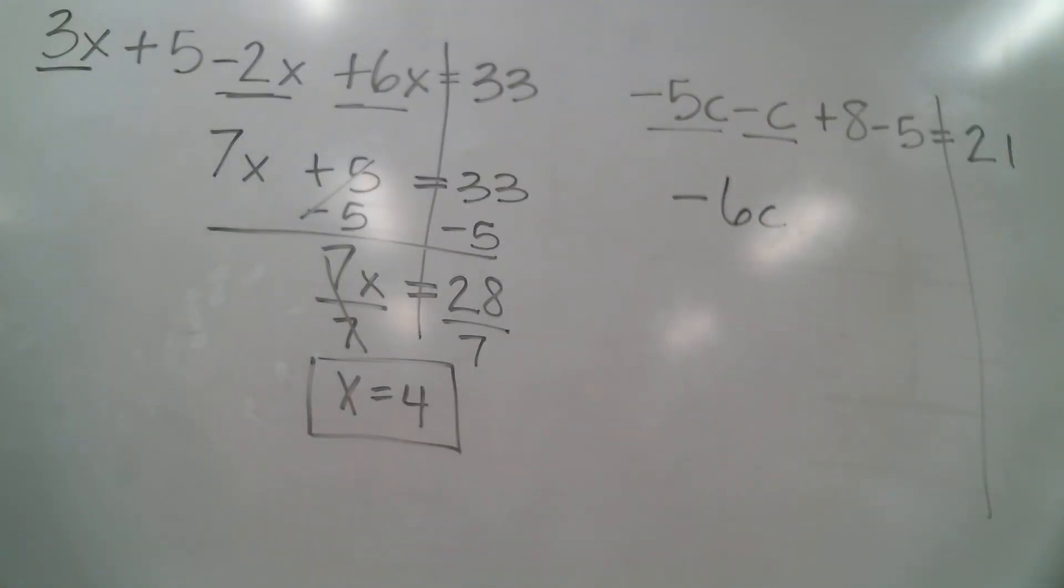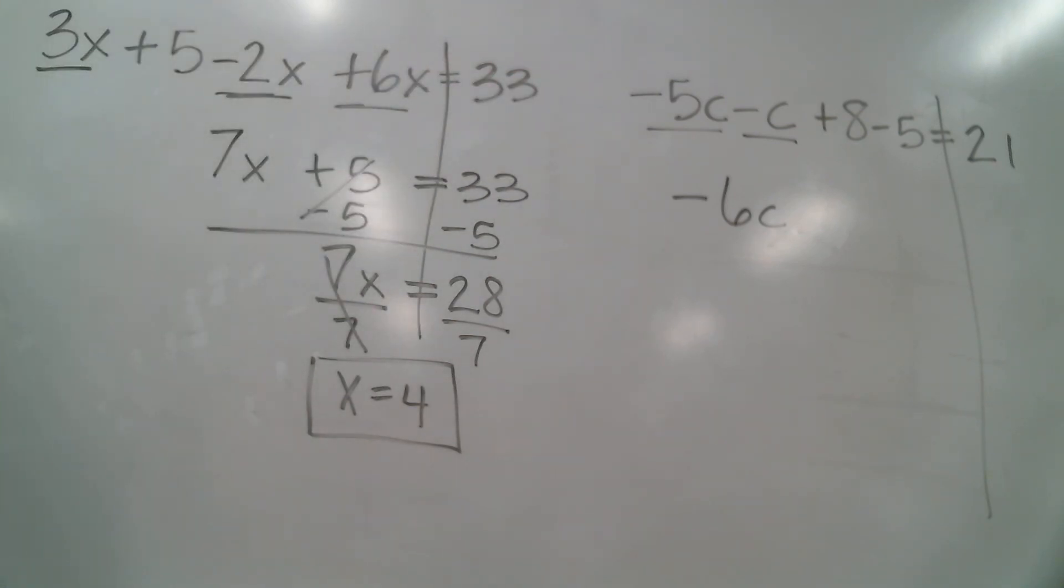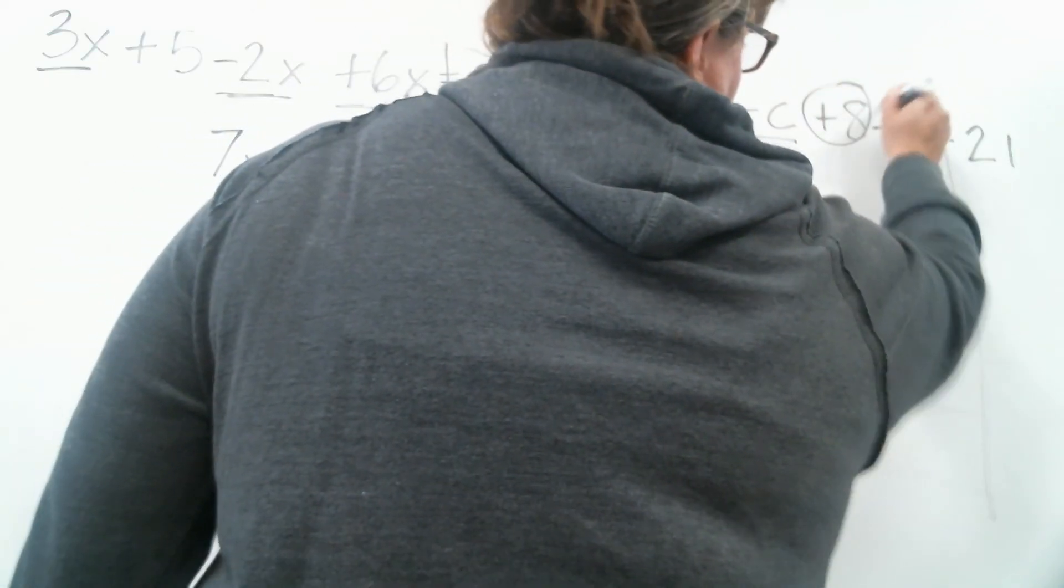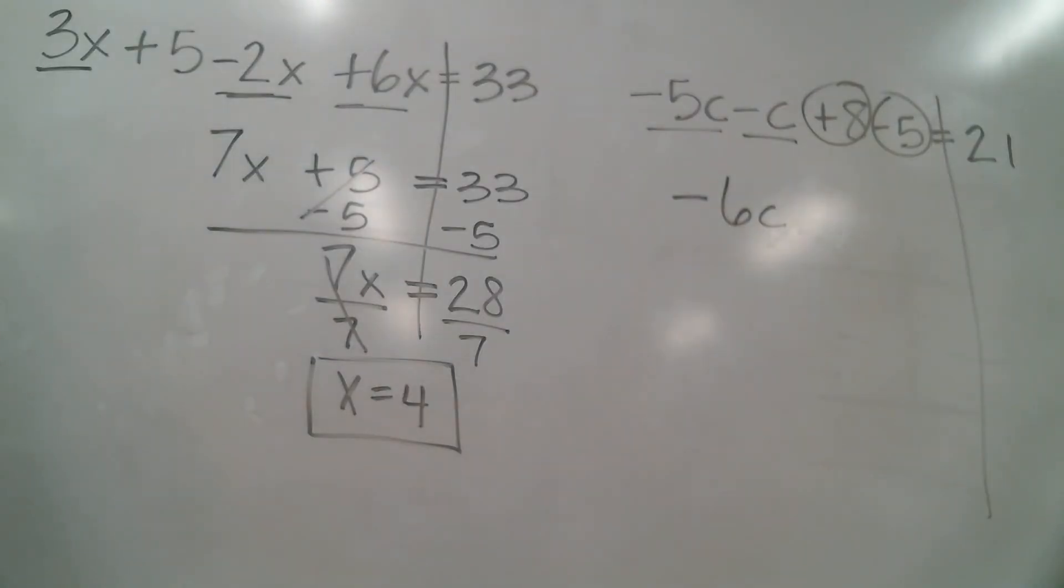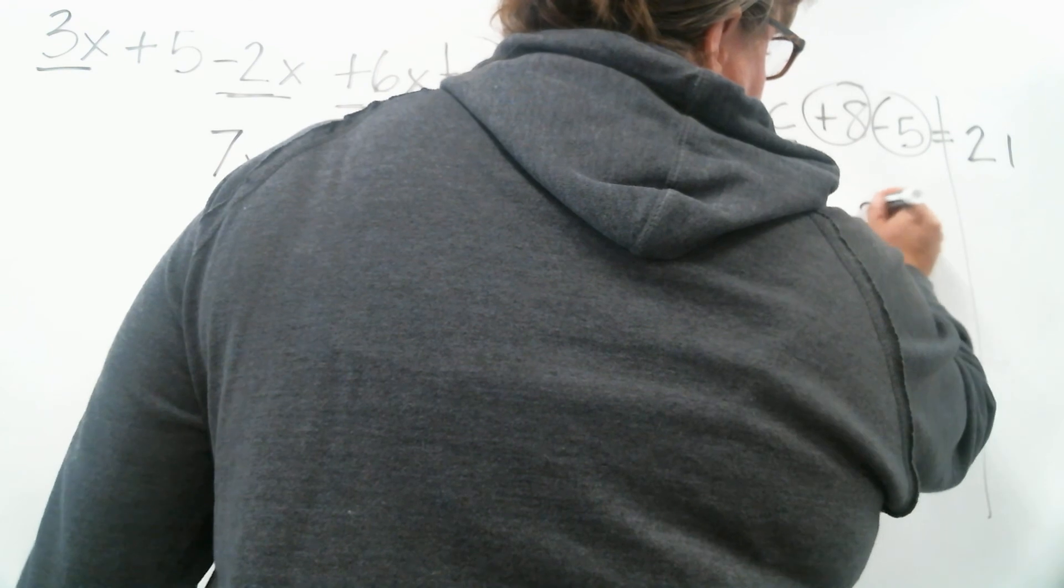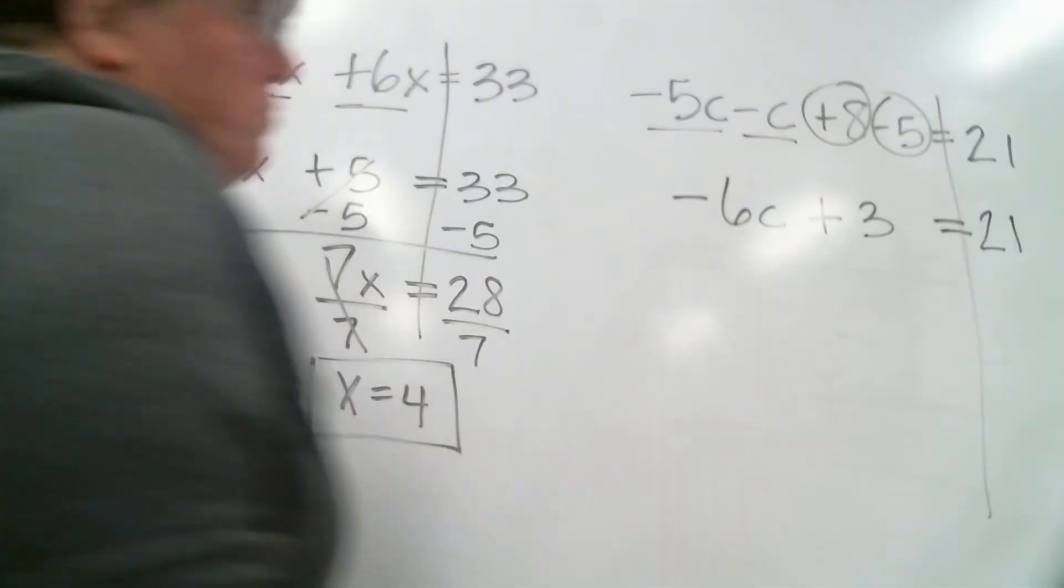And this one's a little bit different than the others that I showed you. Because we have two whole numbers. Two plain whole numbers that also have to be combined up. Those are considered like terms because they have no variable. So we've got a positive 8 and a negative 5. I'm gonna circle those so I know those are different than the others. So positive 8 and negative 5 together would be 3. Just like 8 minus 5. So positive 3. And then I can continue to rewrite it. Equals 21.